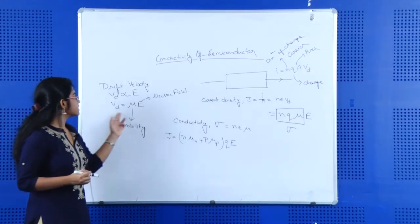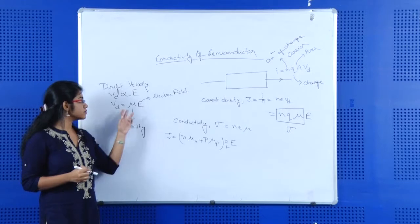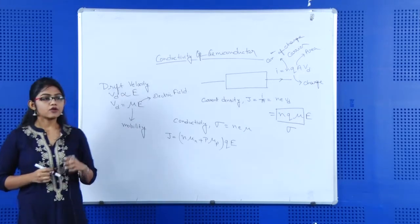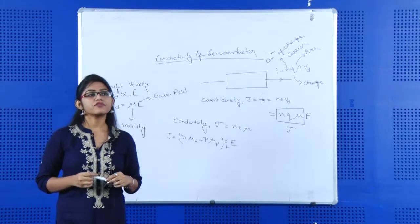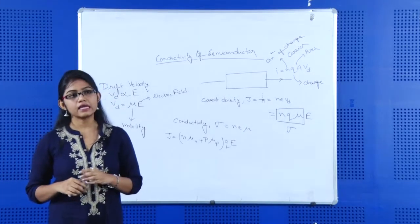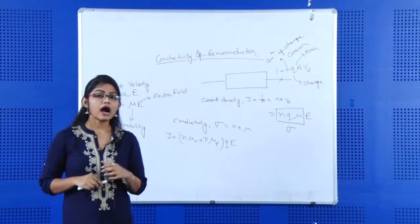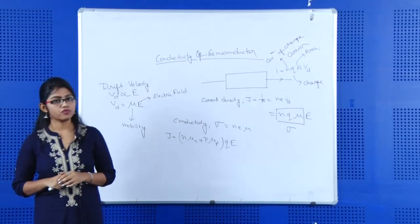Vd is equal to mu times E. What is mu? Mu is the mobility. Mobility is the parameter by which we can know how fast a particle will move.